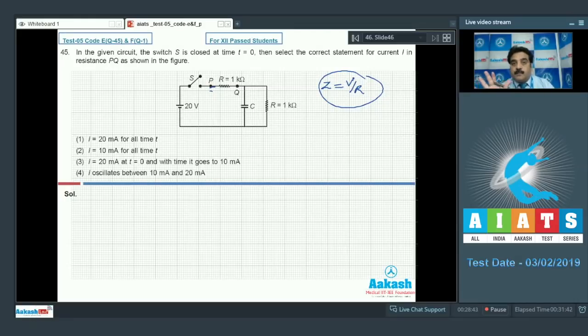At t equals 0, the capacitor behaves as a short circuit. For the current, the potential is 20 volts and the resistance is 1 k ohm, because the capacitor behaves like a short circuit.